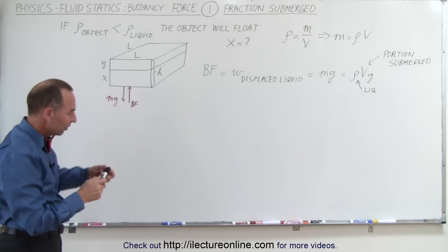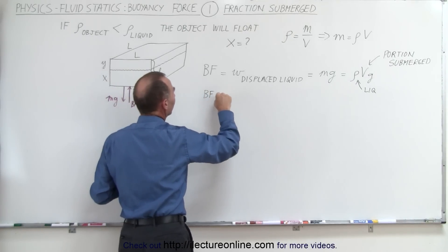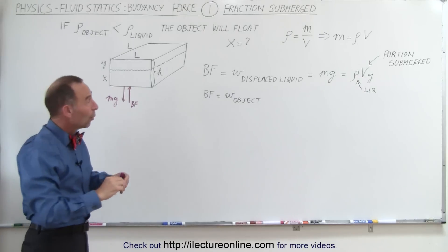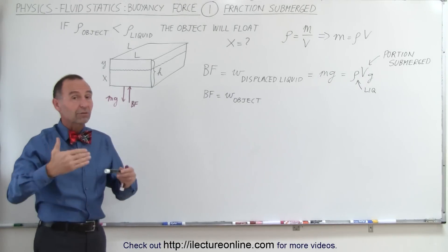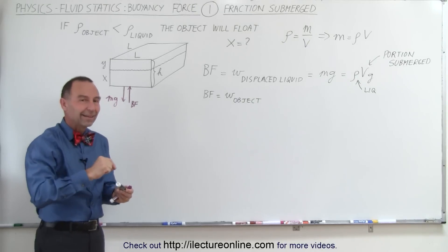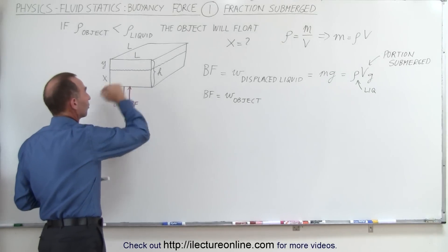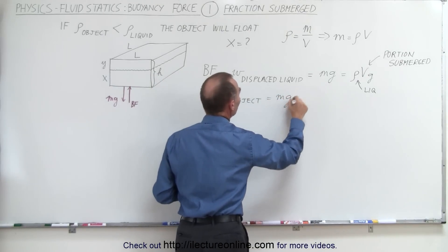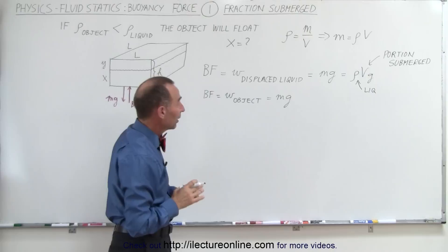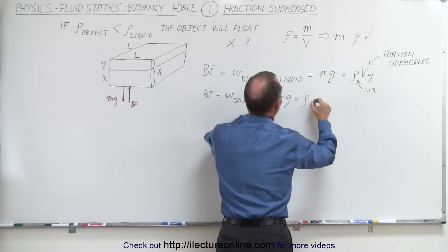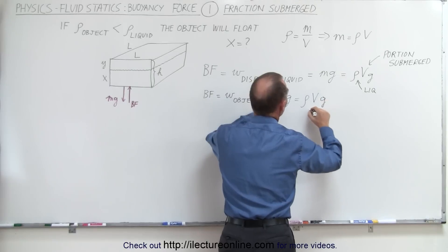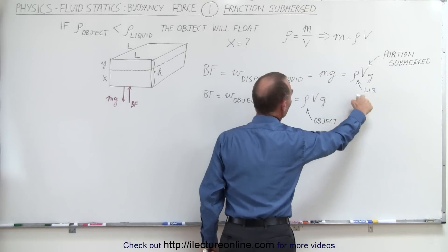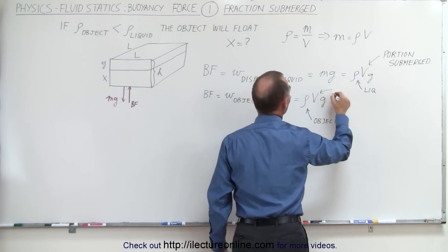Because of this, we can also say that the buoyancy force is equal to the weight of the object — but we can only say this when the object is floating. If the object doesn't float and sinks to the bottom, the buoyancy force is less than the weight of the object. When floating, the buoyancy force equals the weight of the object, which equals m times g. The mass can be written as density times volume times g, where this is the density of the object as opposed to the density of the liquid, and the volume is the volume of the object.